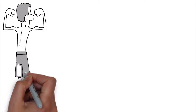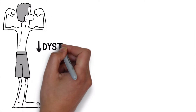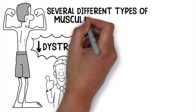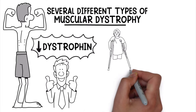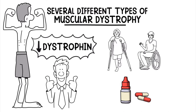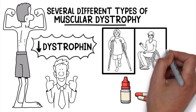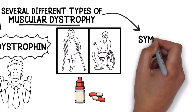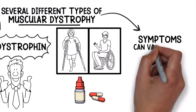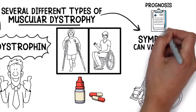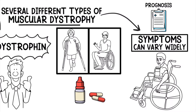The muscular weakness stems from a lack of protein called dystrophin, which is required for our muscles to function normally. There are several different types of muscular dystrophy and the disease state occurs in different stages. This means that treatment varies according to whichever stage the patient is currently in. Because there are so many different types, symptoms can vary widely from patient to patient, and the prognosis depends on the type and severity of symptoms as well.